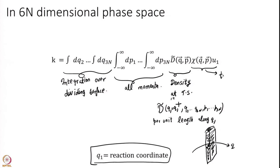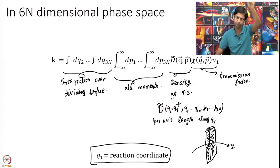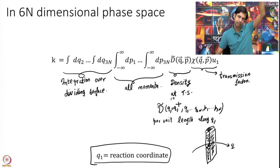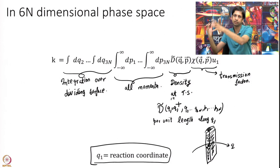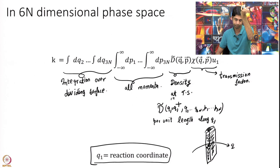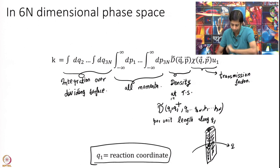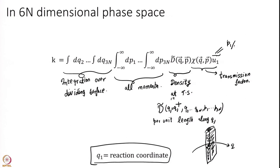Chi is what we define as the transmission factor — that is, if I am at a transition state at some point with some momentum, what is the probability that that point originated from the reactant and will end up in the product? We are only interested in the forward reaction going from reactant to product. Chi tells me whether coordinate point Q, P is coming from reactant in the past and will end up in the product in the future. U1, equal to P1 over M, is the flux — it tells me how many trajectories per second will go through.